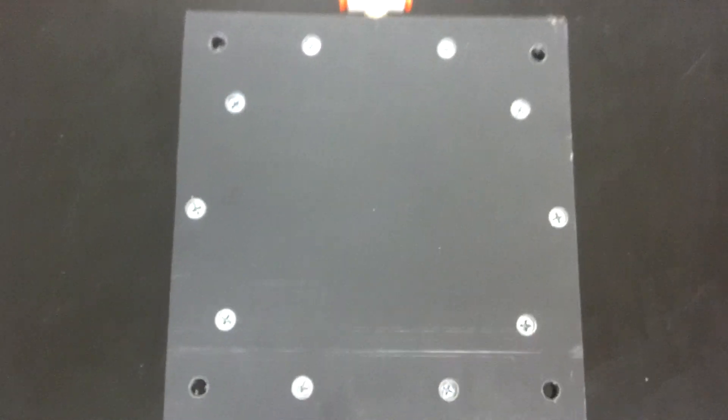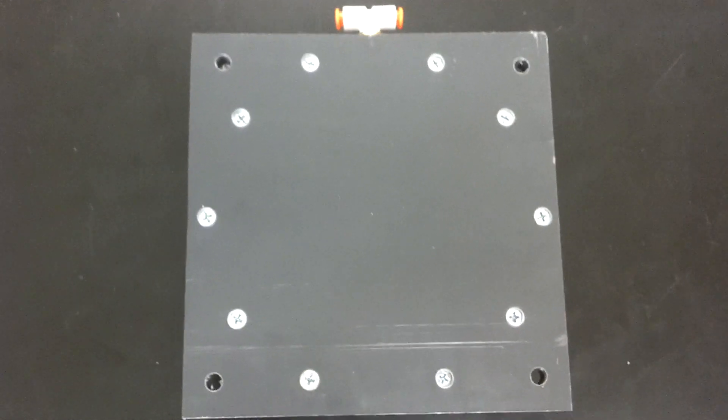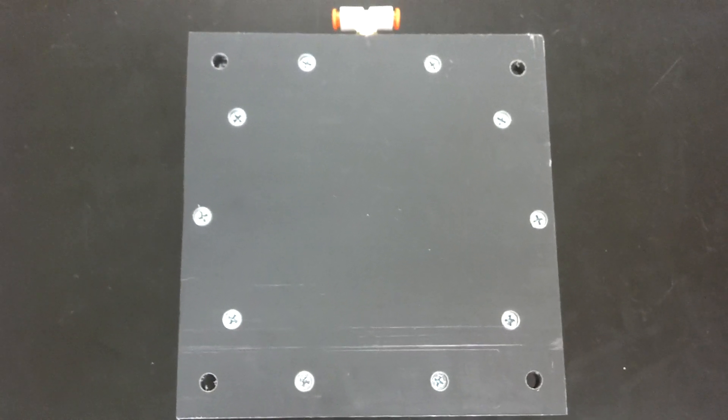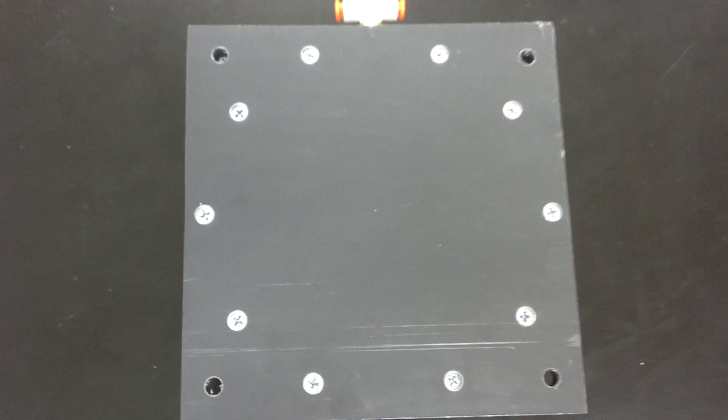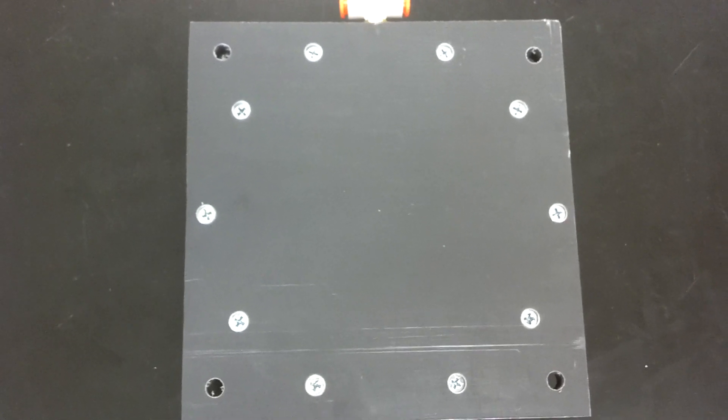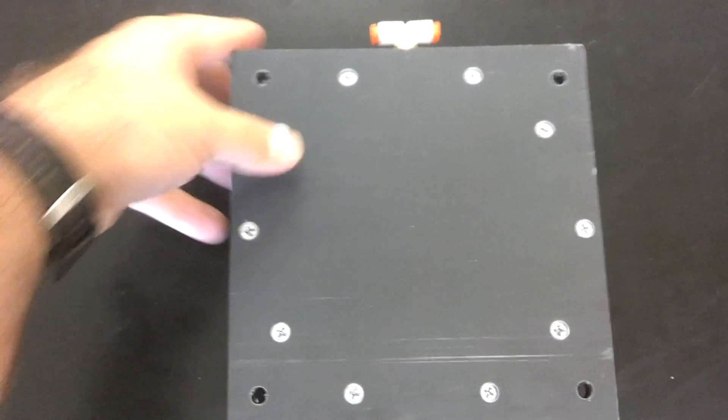So, the four holes on the four corners are where the top plate actually gets bolted to the set. And you can see we used ten number eight screws to attach the top plate to the cylinder.